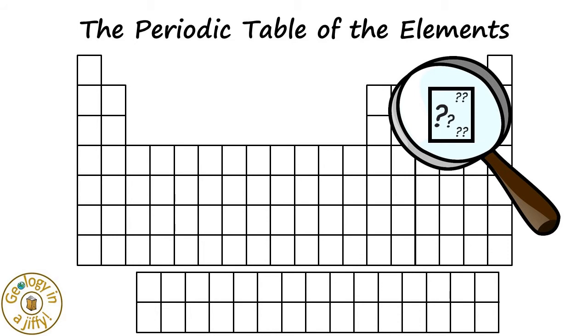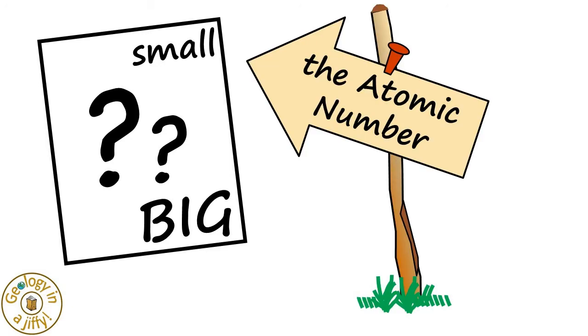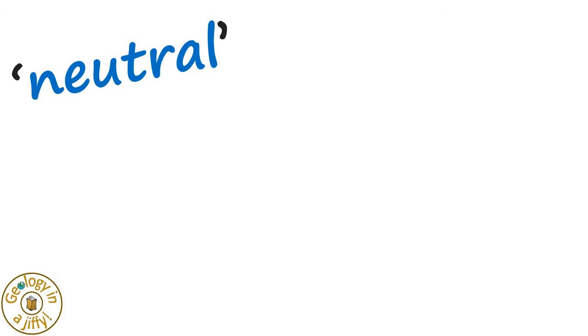We know from our other video that the boxes in the periodic table all have letters and a small and a big number in them. The small number is the atomic number. We also know that atoms are neutral. That is, they have no overall charge.